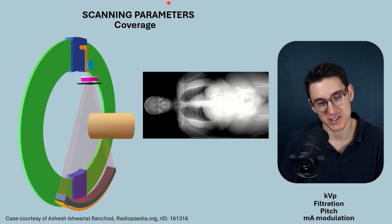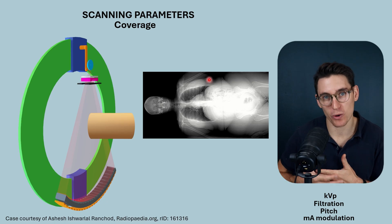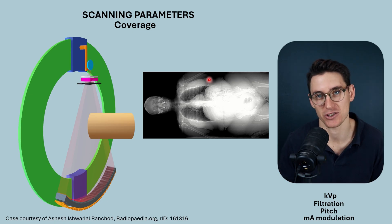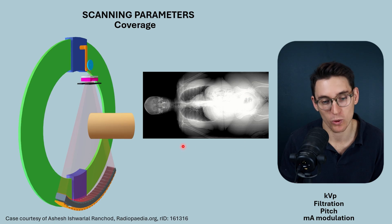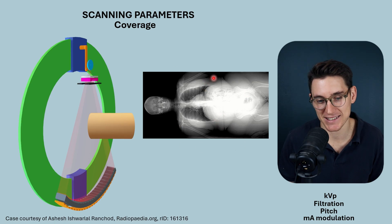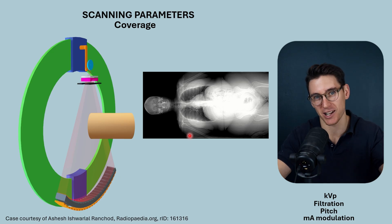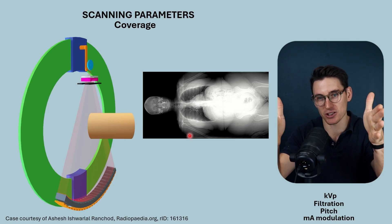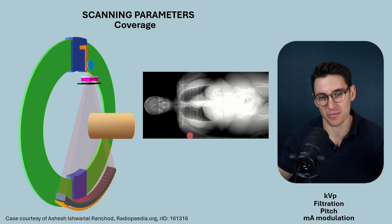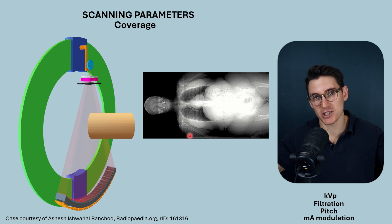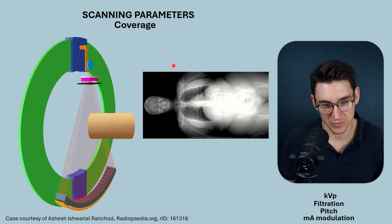The last scanning parameter is a simple one: coverage. The scan length we expose the patient to is proportional to the dose that patient receives — more coverage means more total dose. This can easily happen in clinical practice: if you want to scan the liver but keep including just a little bit more, you end up looking at pelvic structures and the lower thorax. We're not doing the patient any service by exposing them to more radiation than the specific examination requires, so this is an important factor to remember when planning our CT scan.